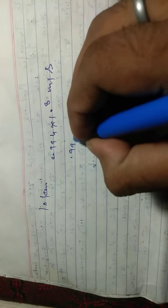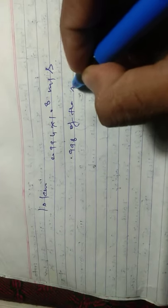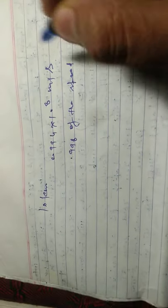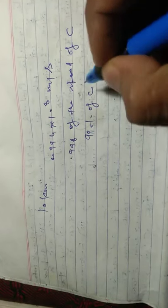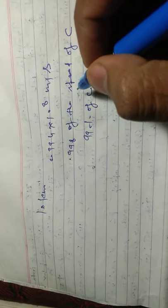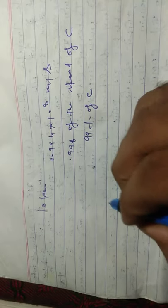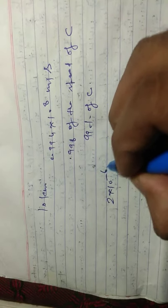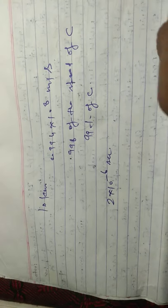This speed is 0.998 of the speed of C, that is 99.8% of the speed of light. Further, we all know that the muon has an average lifetime of 2 × 10^-6 seconds, after which it decays into an electron.